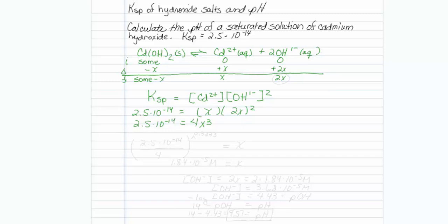So to solve this, 2.5 times 10 to the minus 14 divided by 4 raised to the 0.33333 on your calculator should be equal to x. And I learned that x is equal to 1.84 times 10 to the minus 5th molar.